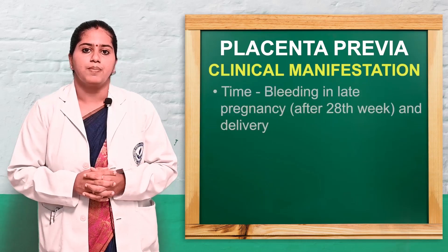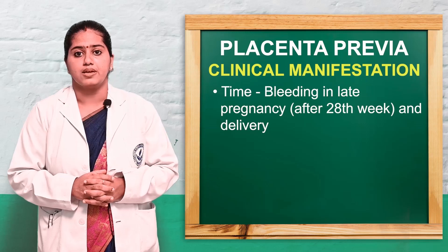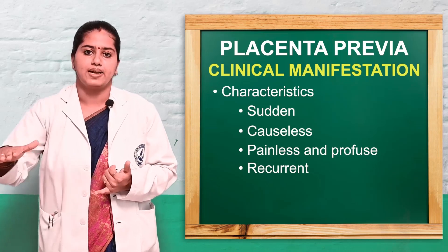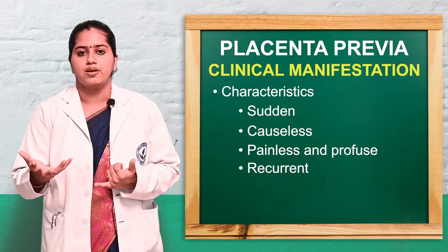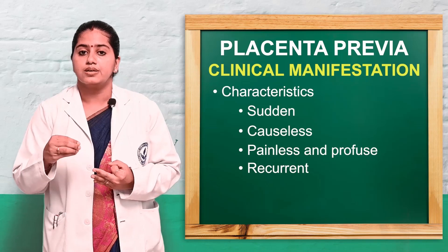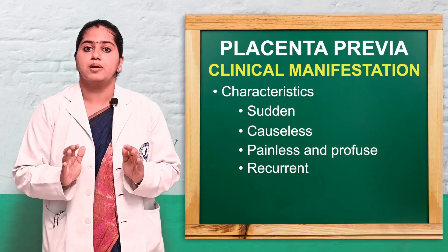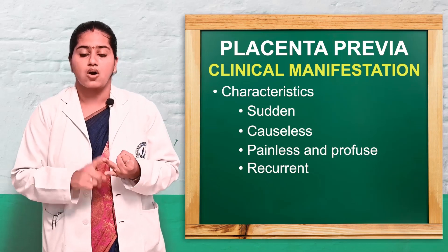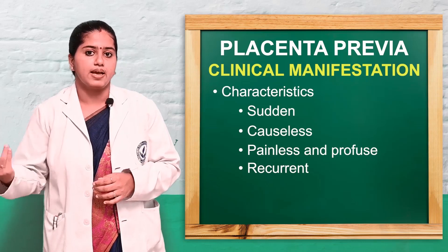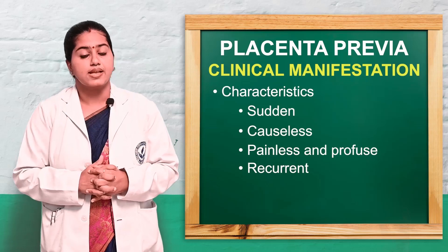The main symptom of placenta previa is bleeding — specifically sudden bleeding where the mother wakes to find pooling of blood on the bed sheets, without any warning. The bleeding is causeless, painless, and recurrent. Bed rest stops the bleeding temporarily, but it recurs. In the early trimester there may be warning bleeding; in the later trimester, continuous bleeding occurs.